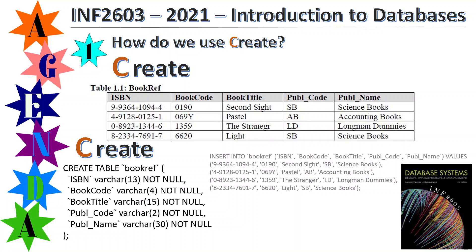So how do we use Create? In my example, I'm going to take the exam paper from October/November 2020 — the UNISA one — and use this table here. The table is called book_ref and these are its columns. Each column has a data type, and there are different data types for each one.